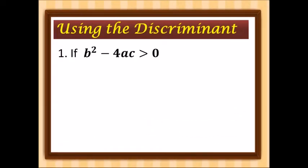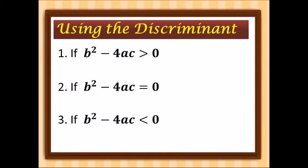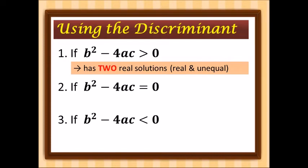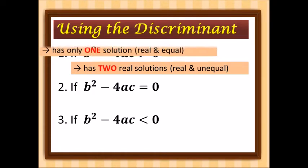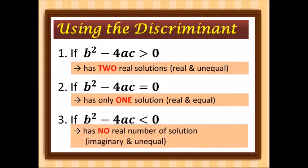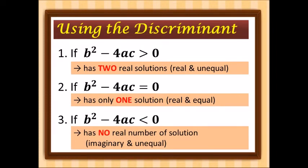The three cases of the discriminant: if it is greater than 0, therefore it has two real solutions which are real and unequal. If it is equal to 0, therefore it has only one solution which is real and equal. And lastly, if it is less than 0, it has no real number solution — meaning it has imaginary and unequal solutions.